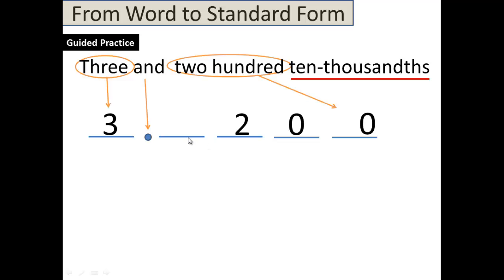As you can still see, we have nothing here, but we have to fill that with a zero. So the correct answer would be 3.0200. You can check yourself by reading this. The decimal point says and. This is two hundred ten thousandths. Okay? I understand that you might need to watch that again because that one was a little tricky.